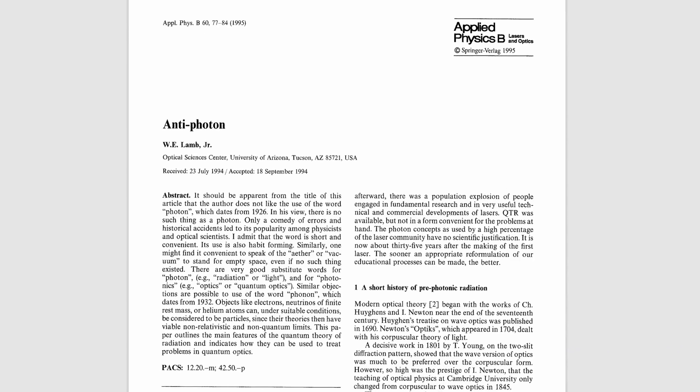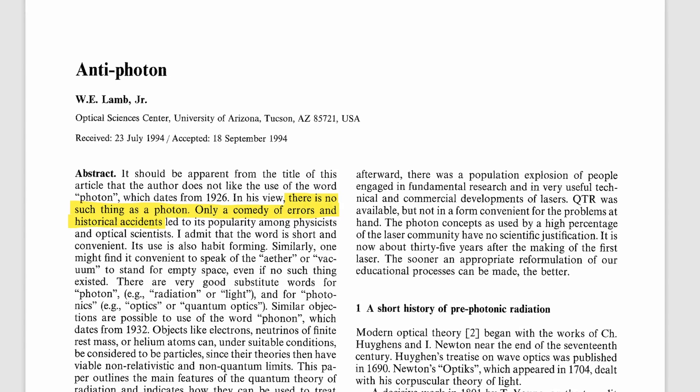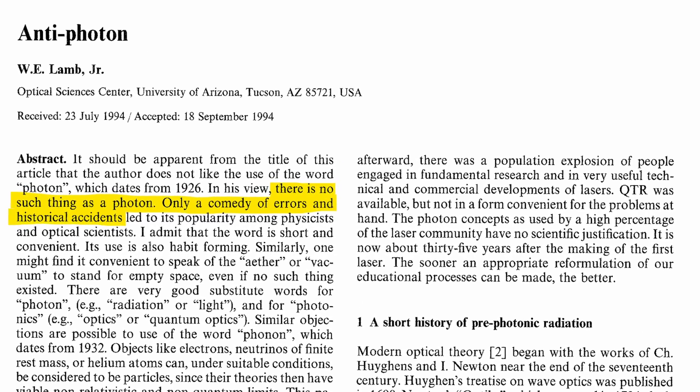And that's why Nobel Prize winner Willis Eugene Lamb wrote a paper called 'Antiphoton', arguing against photons. He explains that photons are a bit like our old concept of the ether or the vacuum. In his view, there is no such thing as a photon, only a comedy of errors on optical scientists. This idea of photons is very convenient to explain when energies exchange between light and an atom, but it leads many people to think of light as a pack of little particles rushing through space, when in reality light is a type of radiation, and we only see photons during interactions.